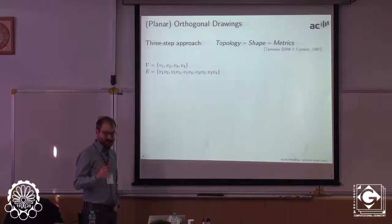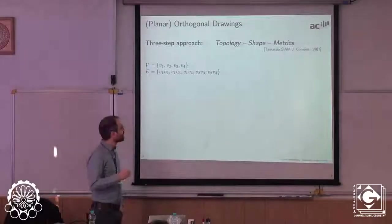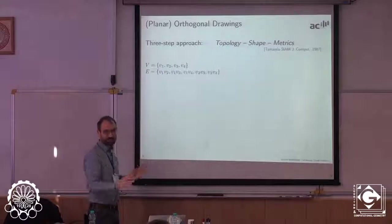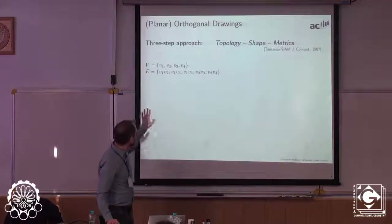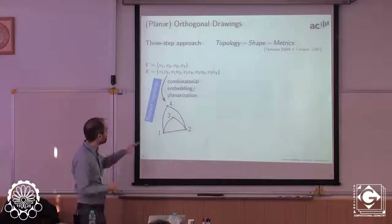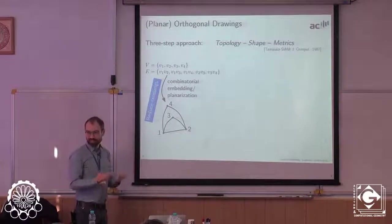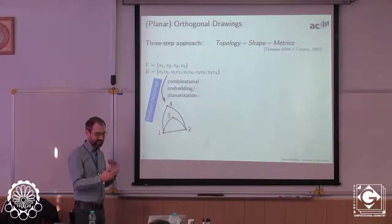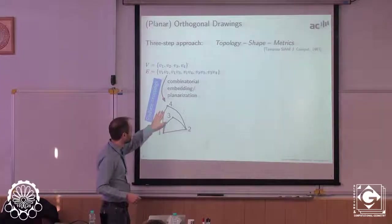The most popular framework for orthogonal layouts is the topology-shape-metrics framework, from Tamassia already in 1987. The idea is that computing an orthogonal drawing can be subdivided into three steps: fixing the topology, fixing the shape, then fixing the metrics. The first step is finding the right embedding — for a planar graph, finding the rotation scheme; for a non-planar graph, doing planarization with few edge crossings and making crossings into dummy vertices.